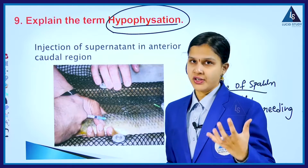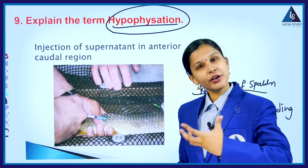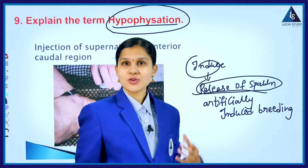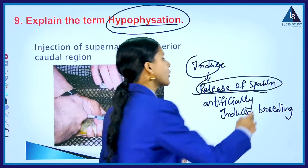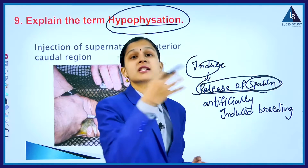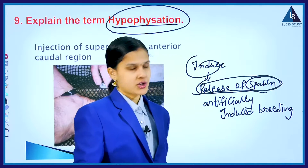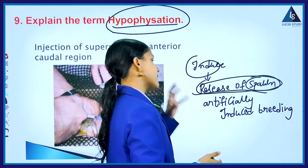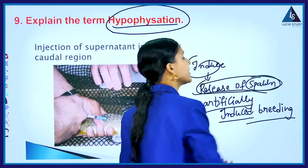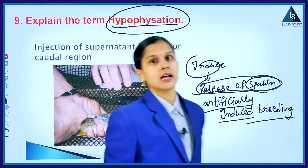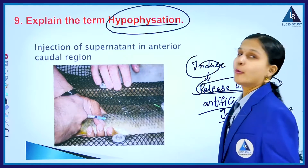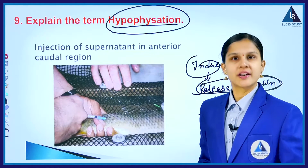In which fishes? Brood fishes. It is injected into the brood fishes to induce the release of spawn for seed production. In this way, this artificially induced breeding technique we call it as hypophysation.